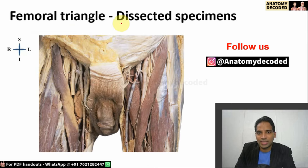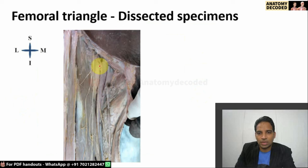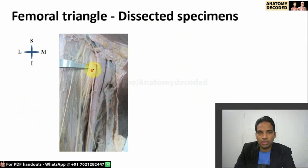Looking at the dissected specimen images, we can see both-sided femoral triangles. The sartorius muscle and adductor longus muscle can be identified, along with the contents. In the right-sided femoral triangle, from medial to lateral we can see the femoral vein, femoral artery, and the lateral-most structure, the femoral nerve, which is shown very clearly with only a short course before dividing into branches.